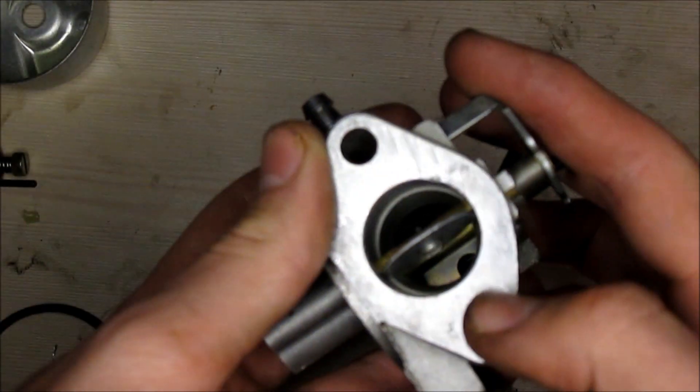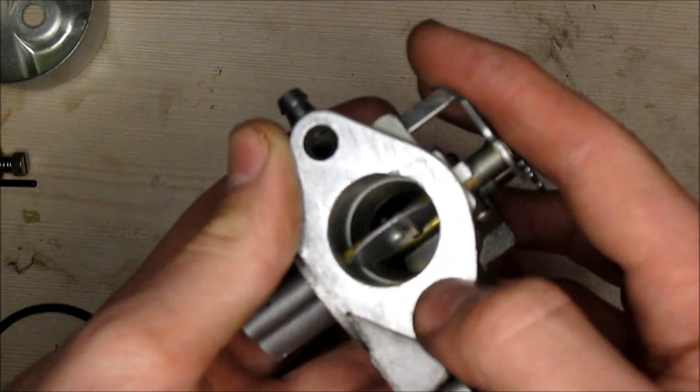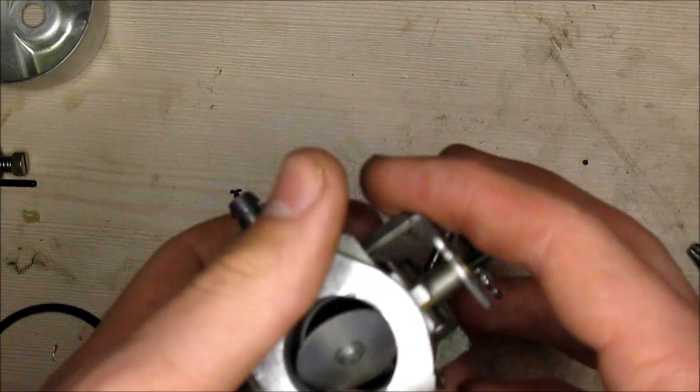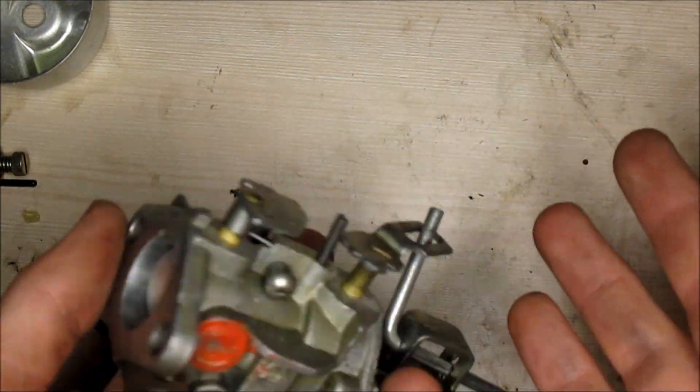If you open your throttle valve and you look inside, if it's pretty clean like this one is, then you're good to go. If not, you can put in some carburetor cleaner or WD-40 works just as good.